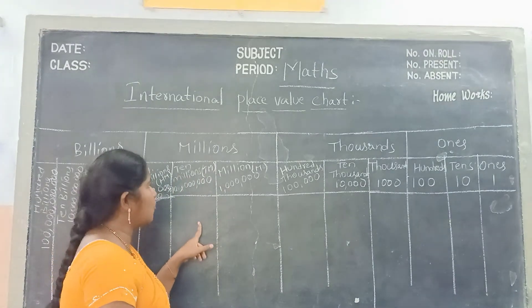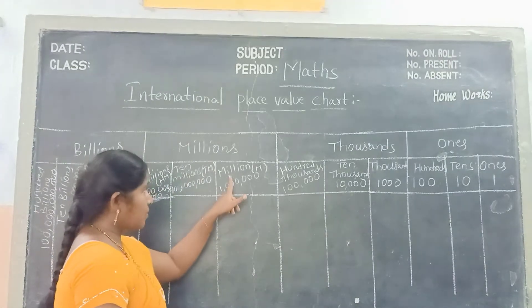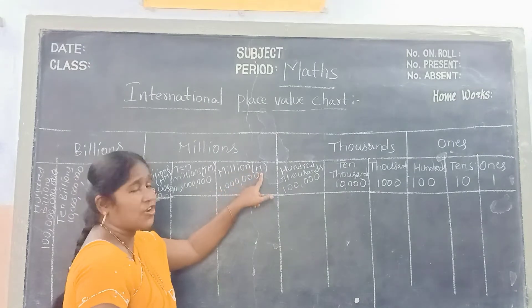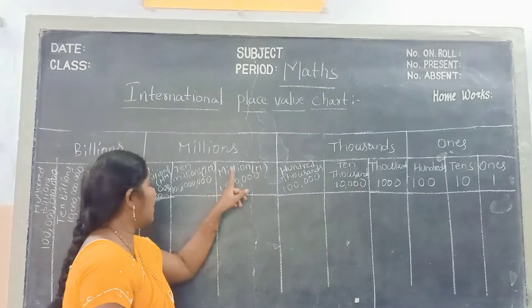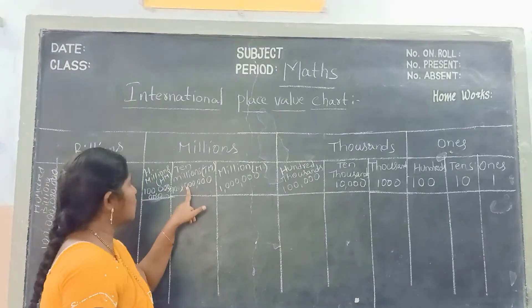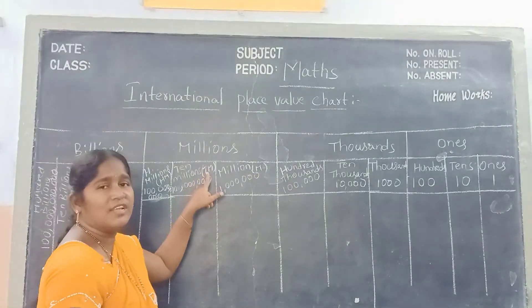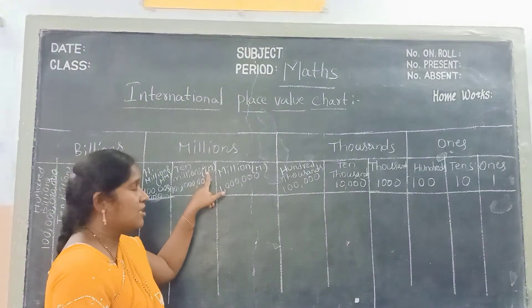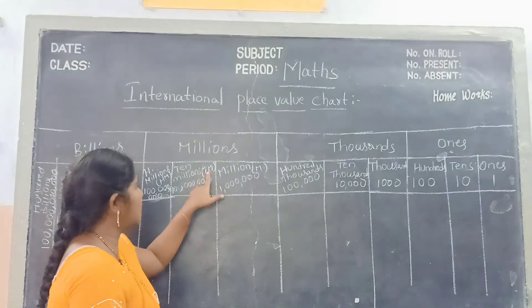In the millions period we have millions — the short form is M. And next one goes to ten millions, short form is TM. That means 10,000,000s.